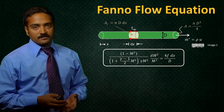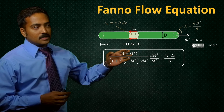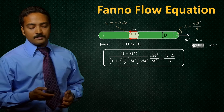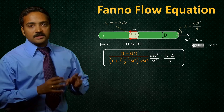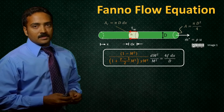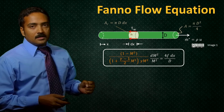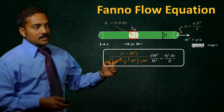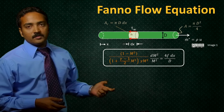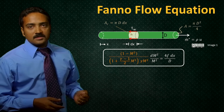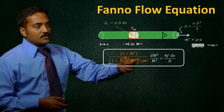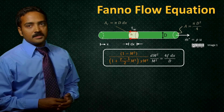Let's first examine this collection of terms, all of which have the Mach number as well as the ratio of specific heats gamma in it. Looking at the denominator first, we notice that we have a 1 plus gamma minus 1 over 2 times M squared. We know that the ratio of specific heats gamma is always greater than 1, which means gamma minus 1 is going to be positive. Also, M squared will be positive, which essentially means the first term in this parenthesis is a positive number. Similarly, gamma times M squared is also a positive number. Therefore, the denominator of this highlighted expression is going to be a positive number.